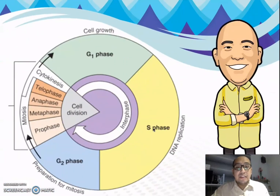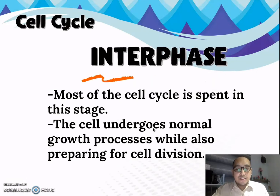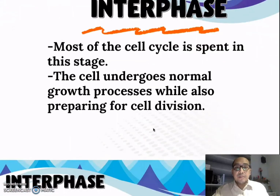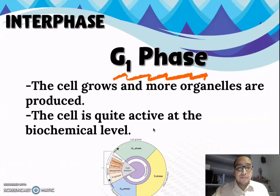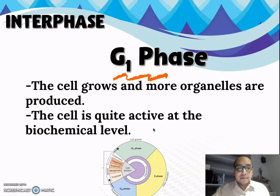Looking at the graphical representation of the cell cycle, interphase is where most of the cell cycle is spent. The cell undergoes normal growth processes while also preparing for cell division. The interphase is subdivided into different phases. The first is the G1 phase, or the first gap phase, where the cell grows, more organelles are produced, and the cell is quite active at the biochemical level.